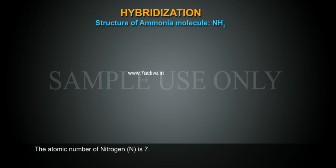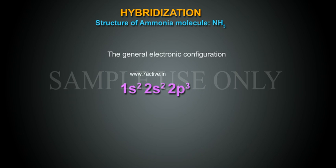The atomic number of nitrogen N is 7. The general electronic configuration 1s2, 2s2, 2p3.